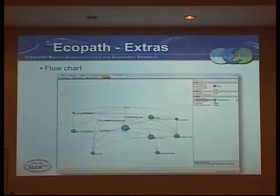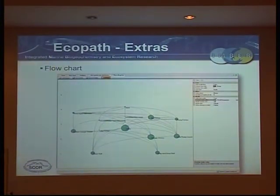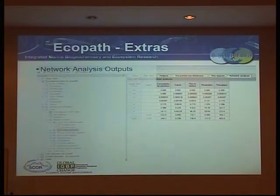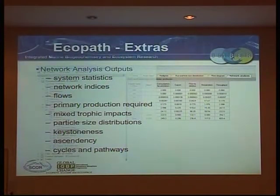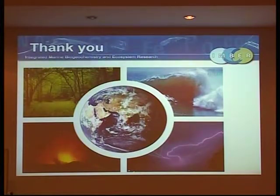Some of the other tools in Ecopath are communication and network analysis tools. With a press of a button it tells you what the food web looks like in your model, including built-in biomass, so you can see that your mermaids make up a lot of the biomass compared to jellyfish. You can also get some of the classical network analysis tools that have been used in ecology for 30-odd years, which helps you compare between different systems. And that's all on Ecopath.